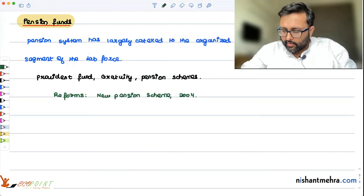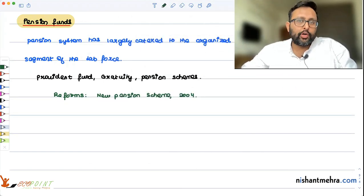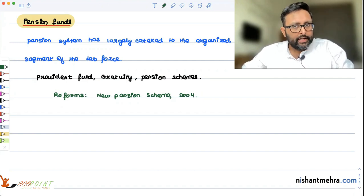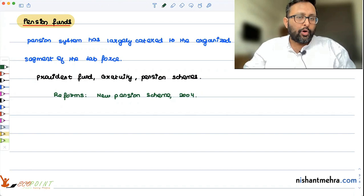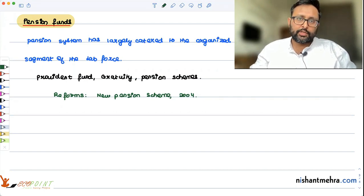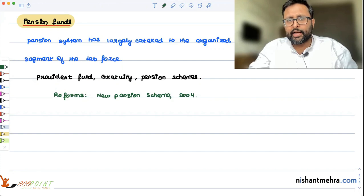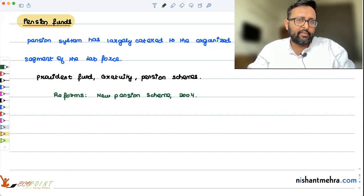India does not have a universal social security system. In many developing countries, we didn't have this. In India also, we don't have. Mainly, the pension system or the social security system is mainly for the organized sector of the labor force, both public and private. In public sector, you have the social security which is coming in three layers: provident fund, gratuity and pension scheme. In private sector, you mainly have the provident fund.